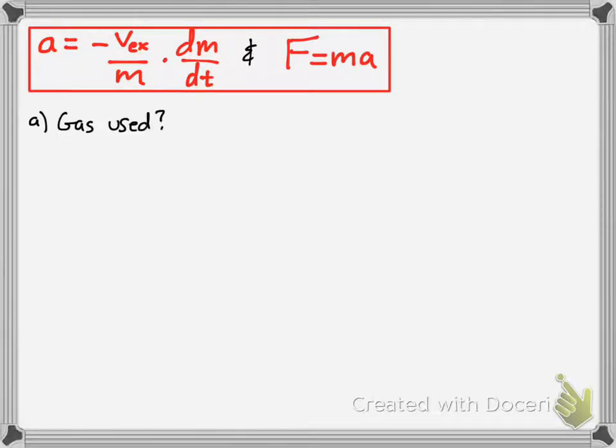The first part asked for how much gas was used. Remember, that was dm/dt is what we're looking for. Simply by manipulating the acceleration equation, you can solve for the change in mass over time.